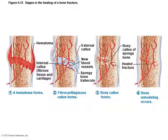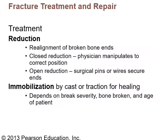Fracture treatment is called reduction — realignment of the broken bone ends. Closed reduction is where a physician manipulates the bones into the correct position without surgery. If the bones cannot be repositioned without surgery, that's open reduction, where pins, wires, plates, and screws are used to put the bones back into place. Sometimes immobilization by casts or traction is needed for healing, depending on break severity, the bone broken, and the age of the patient.